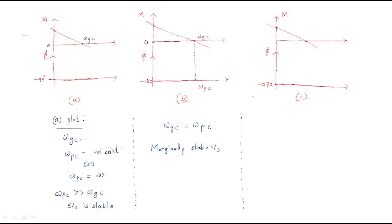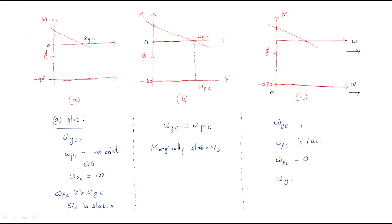For plot C, the magnitude touches zero at the gain crossover frequency. The phase starts directly at minus 270 degrees from frequency zero. Since the phase crossover frequency — where phase touches minus 180 — occurs at a very small or zero frequency, omega_pc is effectively zero, which is less than omega_gc.